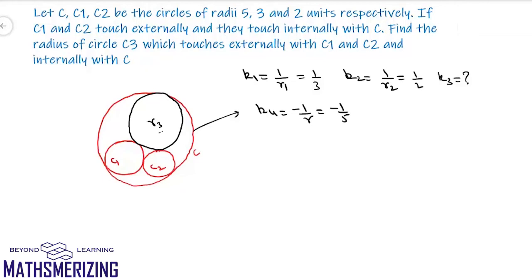Now if we use Descartes' theorem, I can write k3 as k3 equals k1 plus k2 plus k4 plus minus twice under root k1k2, k2k4, k4k1. So now I'll put the value of k1, k2, and k4. So I'll get k3 as 1 upon 3 plus 1 upon 2 minus 1 upon 5 plus minus twice under root.